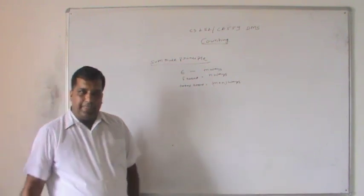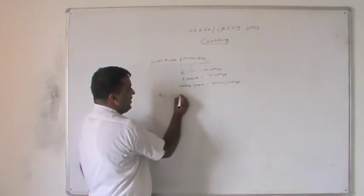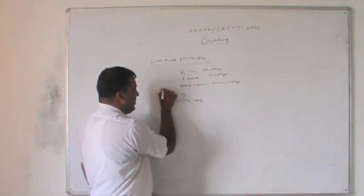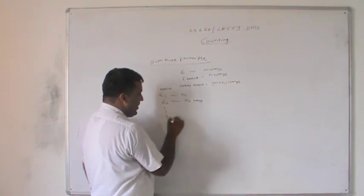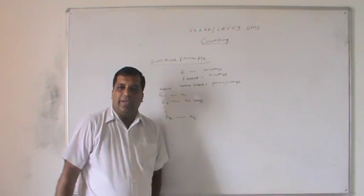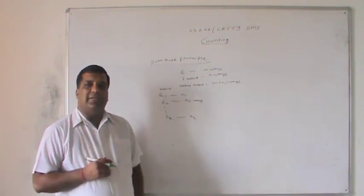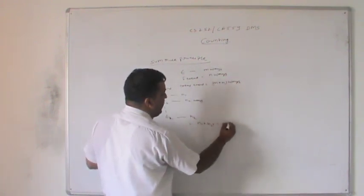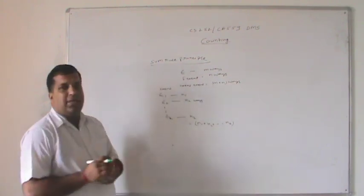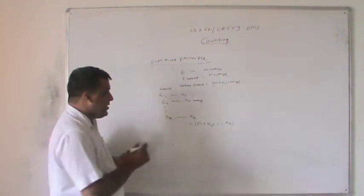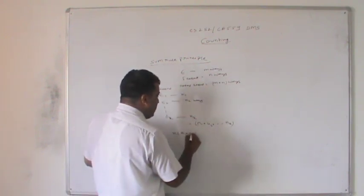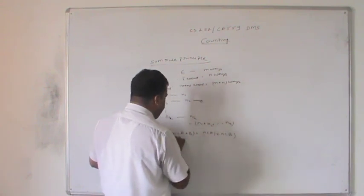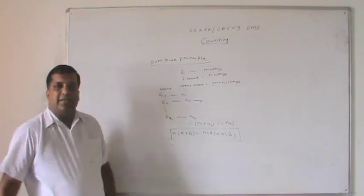Similarly, event E1 can occur in n1 ways, E2 in n2 ways, and up to Ek event occurs in nk ways, and all events cannot occur simultaneously. So the total number of ways is n1 plus n2 up to nk. That is called the sum rule principle: n of A union B equals n of A plus n of B.